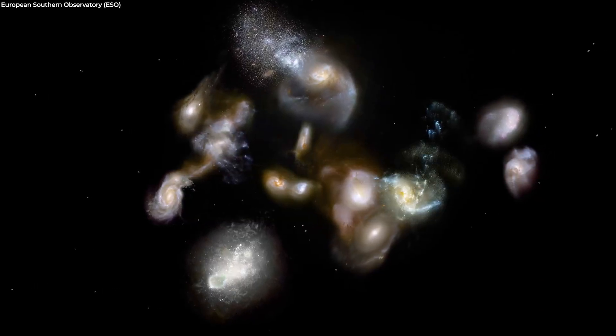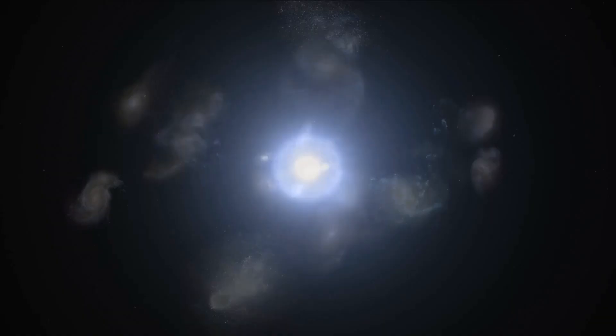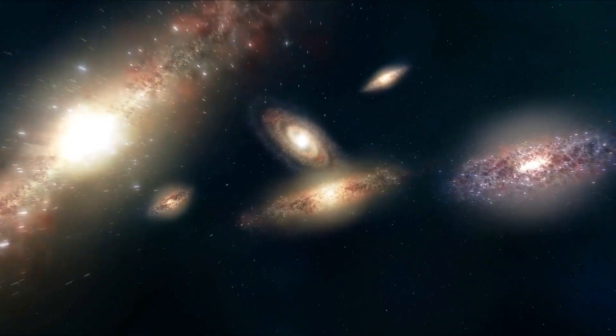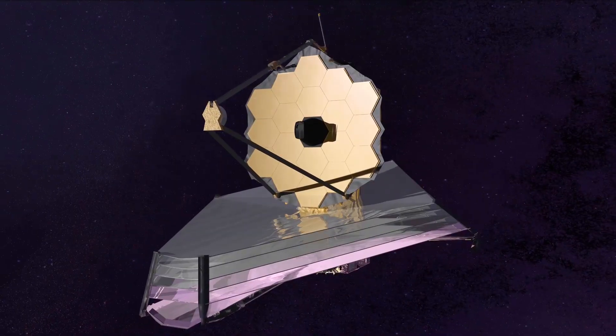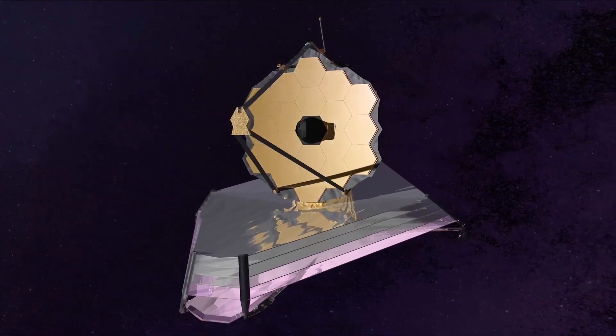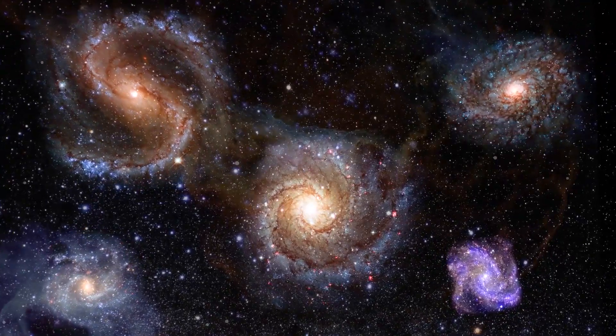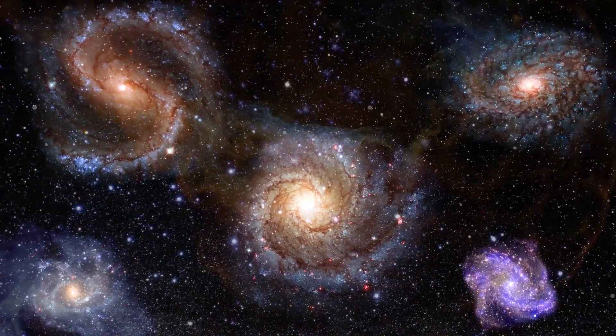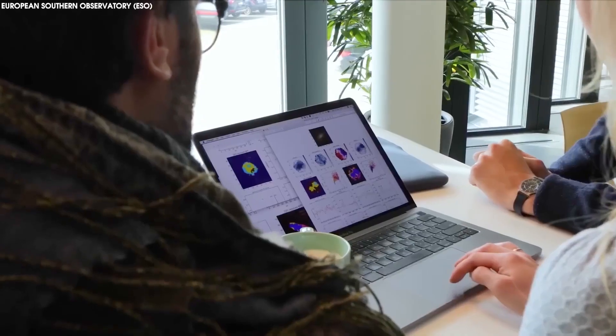They discovered many more of these really old galaxies than anyone expected, some of which date back as far as a few hundred million years after the Big Bang. The James Webb Space Telescope has discovered more than 1,000 galaxies lurking out in the early universe that resemble our own Milky Way, according to a recent study by a group of international researchers.